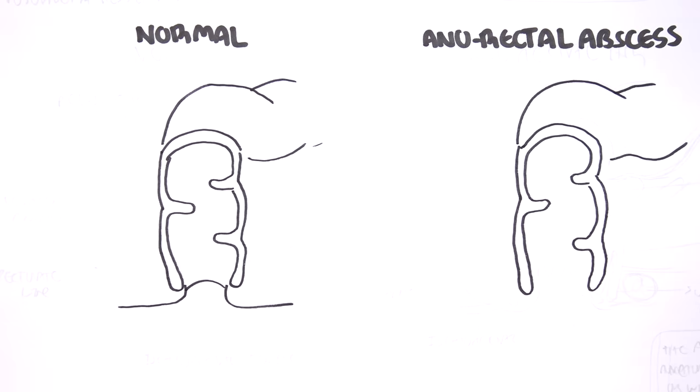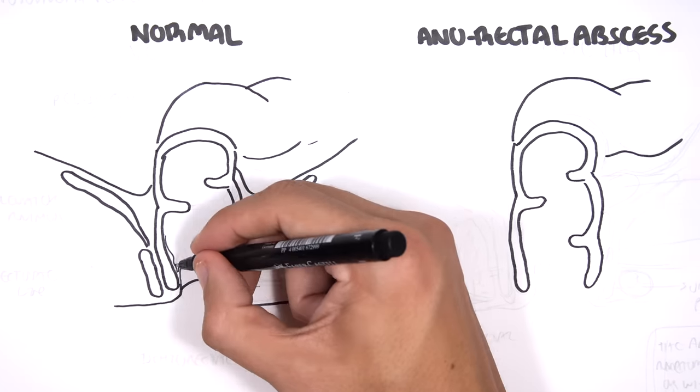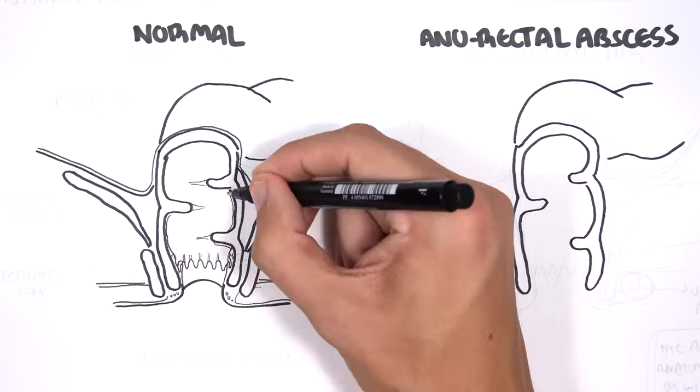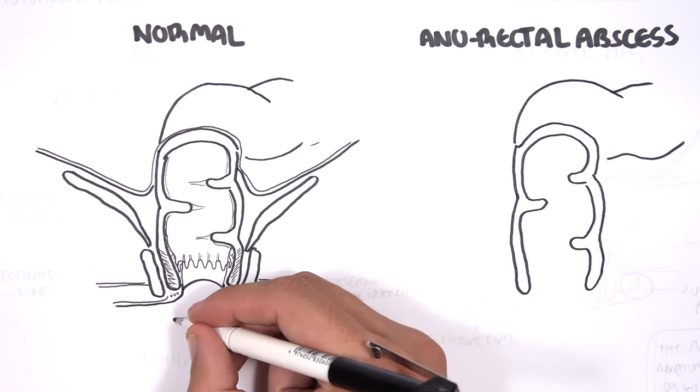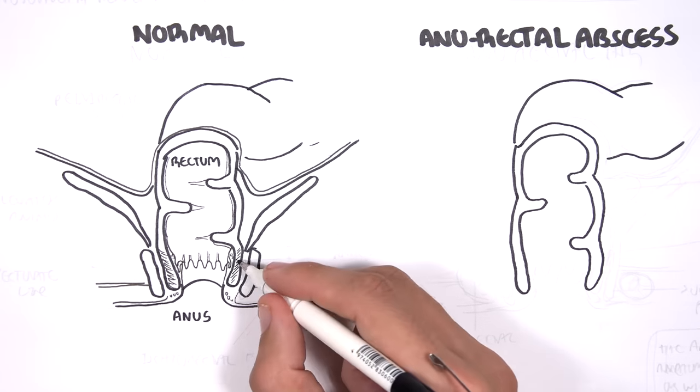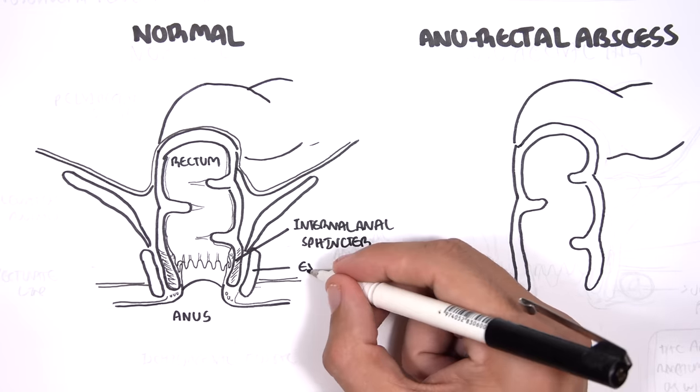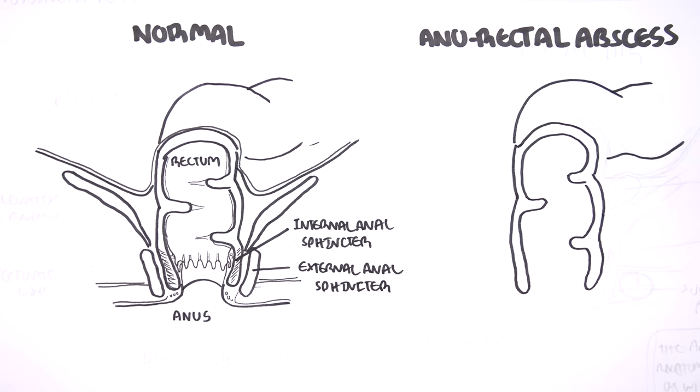Let us now compare normal anatomy to anorectal abscess. Let's look at the normal anatomy first. So here we have the anus, the rectum, the anal canal. The anal canal has involuntary muscles, the internal anal sphincters, and it also has the voluntary muscles, the external anal sphincter.